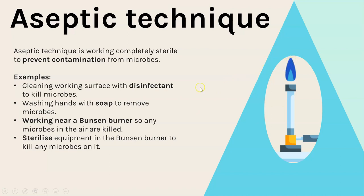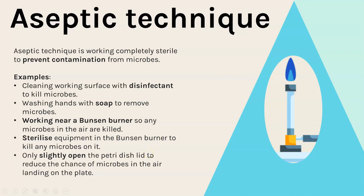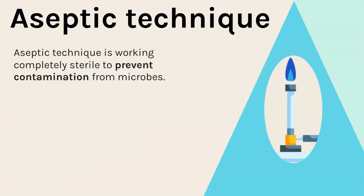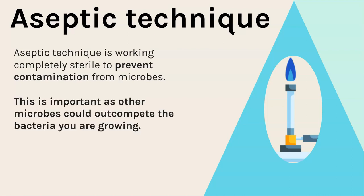Any metal equipment we sterilize by putting it into the Bunsen burner flame. When you have to open your petri dish to put in the antibiotic discs and bacteria, work near the Bunsen burner and try to only open the lid a little bit to reduce the chance of microbes in the air landing on your plate. Aseptic technique is so important because if you get contamination on your petri dish, the bacteria or fungi that grows might out-compete the bacteria you want to examine - competing for nutrients and space in the agar jelly, or releasing chemicals that kill your bacteria.